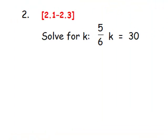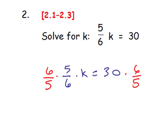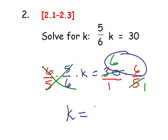Number 2. Solve for k. We have 5 sixths times k equals 30. To solve for k and isolate the variable, the easiest way is to multiply each side by the reciprocal of 5 sixths, which is 6 fifths. Because I'm multiplying by a fraction, I'm going to write 30 as 30 over 1. On the left side, the 5's divide out and so do the 6's. On the right side, 5 divides into 30 six times, giving us k equals 6 times 6, which is 36.